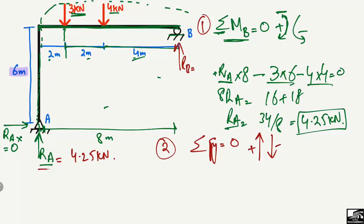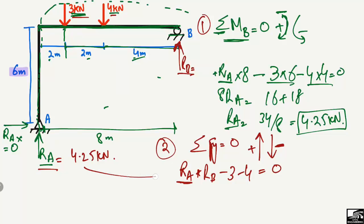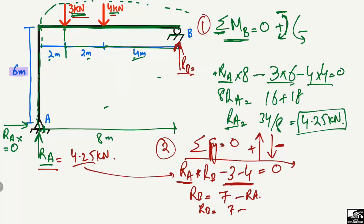The upward forces are RA and RB, so: RA plus RB minus 3 minus 4 equals zero. Since RA equals 4.25, shifting terms to the right side gives RB equals 7 minus RA, which is 7 minus 4.25, giving us RB equals 2.75 kilonewtons.